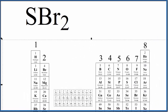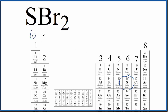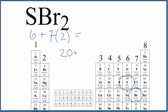If we find Sulfur on the periodic table, it's in group 16, sometimes called 6A — Sulfur has six valence electrons. Bromine is in group 17, sometimes called 7A, and all of those have seven valence electrons. We have two bromines, so six plus 14 gives us a total of 20 valence electrons for the SBr2 Lewis structure.